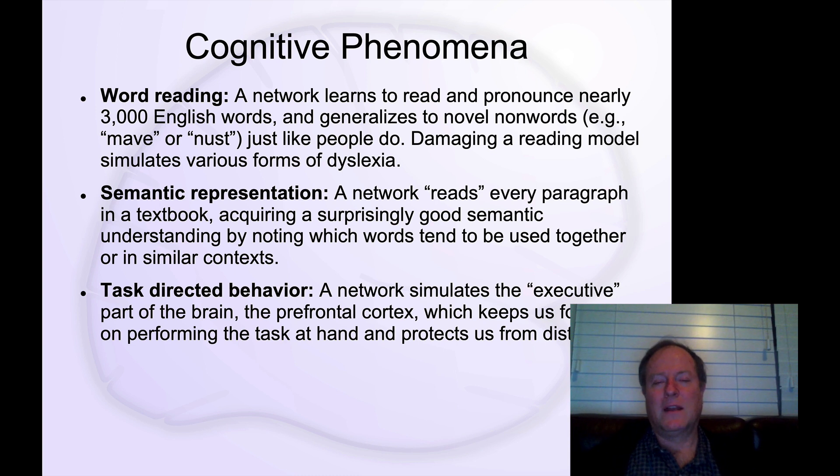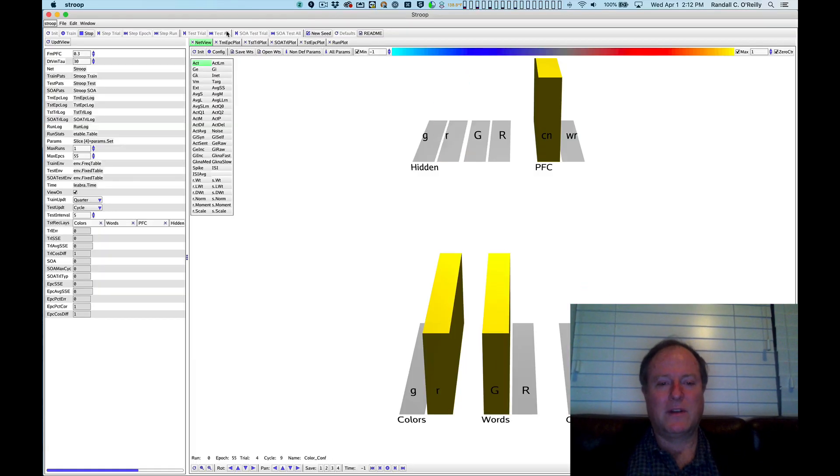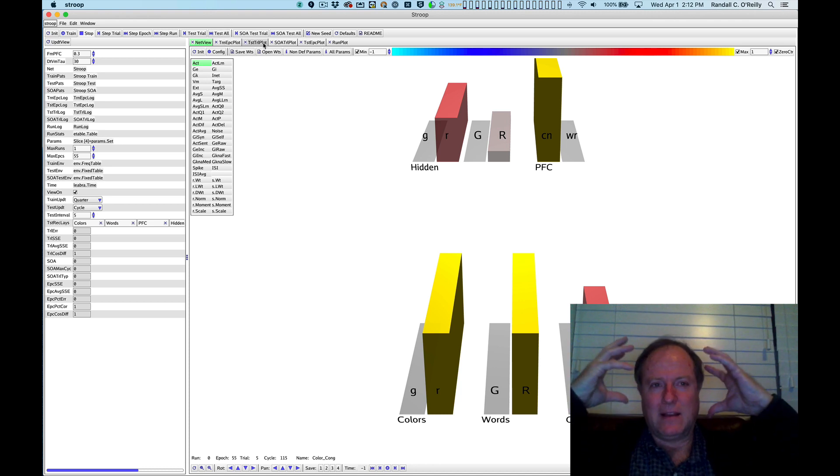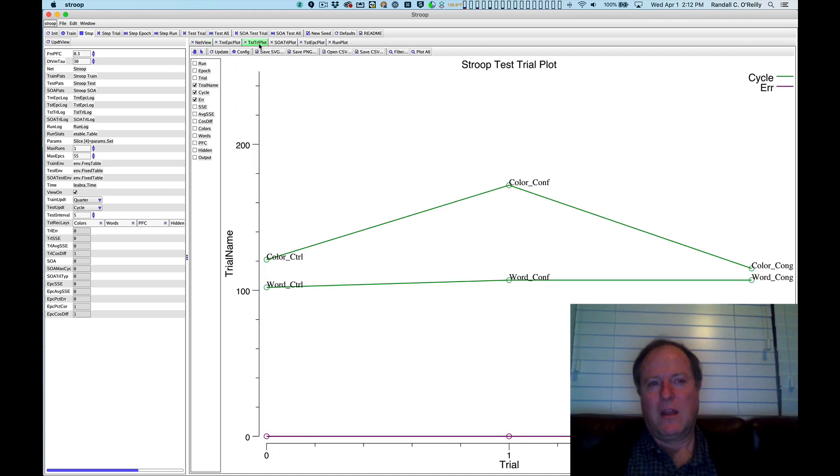Finally, we'll look at how these working memory representations, working memory abilities in frontal cortex can support executive function and the ability to plan, reason and do higher levels of cognition that require this kind of high level of cognitive control, staying focused and staying on task.